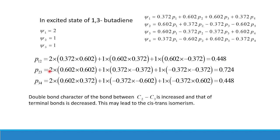For P23 in the excited state: ψ1 contributes 2 × (0.602 × 0.602), ψ2 (one electron) contributes 1 × (0.372 × −0.372), and ψ3 (one electron) contributes 1 × (−0.372 × −0.372). When calculated, P23 comes out to be 0.724.